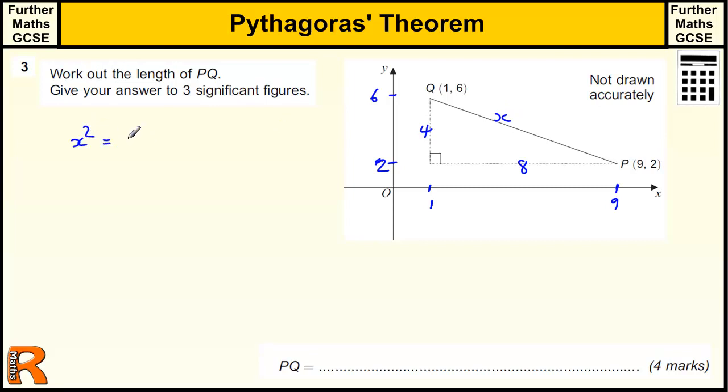that squared is equal to 4 squared plus 8 squared. So x squared is equal to 16 plus 64, which is 80. So we want to find the square root of 80 to get our answer.